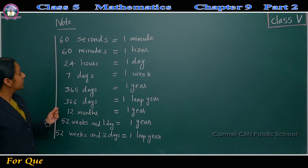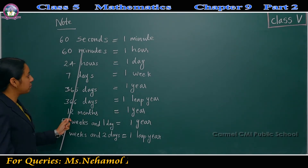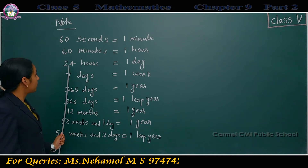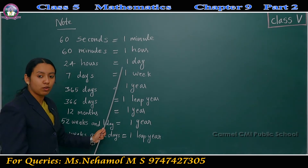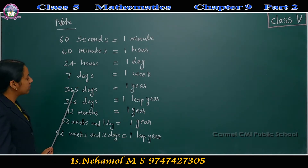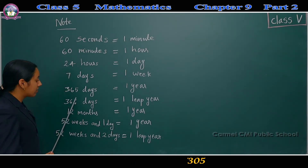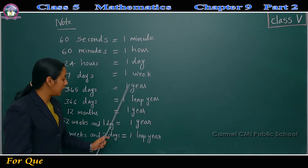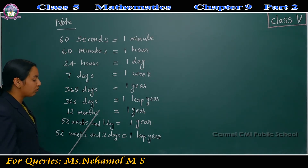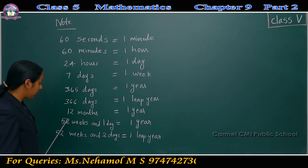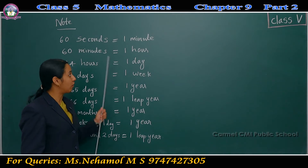Note: 60 seconds is equal to 1 minute, 60 minutes is equal to 1 hour, 24 hours is equal to 1 day, 7 days is equal to 1 week, 365 days is equal to 1 year, 366 days is equal to 1 leap year, 12 months is equal to 1 year, 52 weeks and 2 days is equal to 1 leap year. You have to memorize this table.